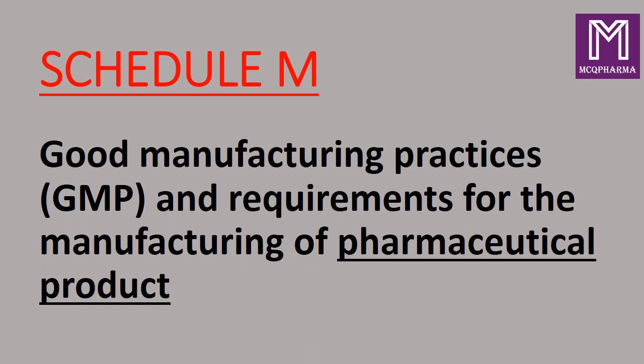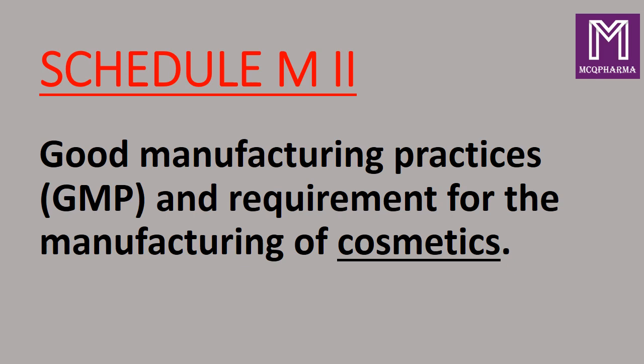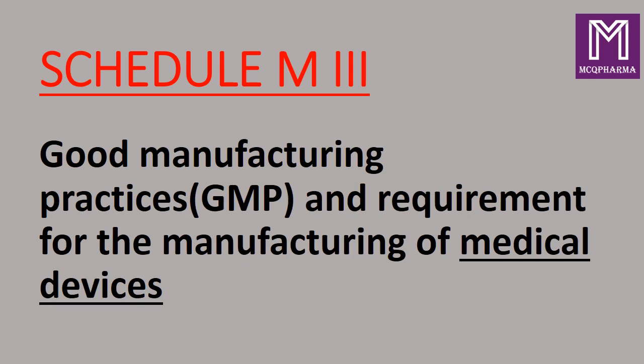Schedule M: Good Manufacturing Practices and requirements for the manufacture of pharmaceutical products. GMP includes Schedule M, M1, M2, and M3. M for pharmaceutical products; M1 for good manufacturing practices for homeopathic medicines; M2 for cosmetics; M3 for good manufacturing practices for medical devices.